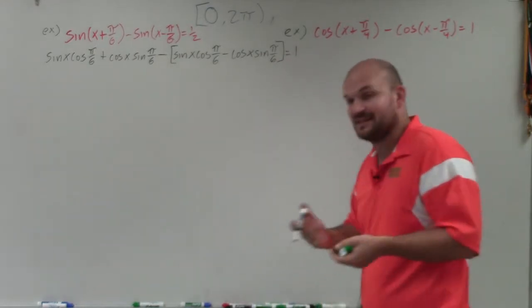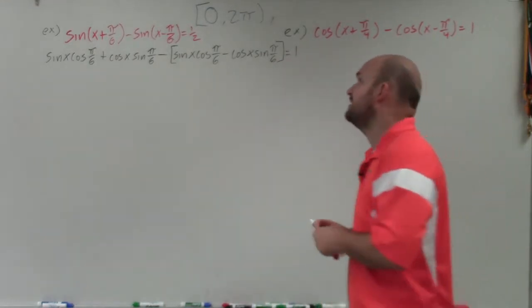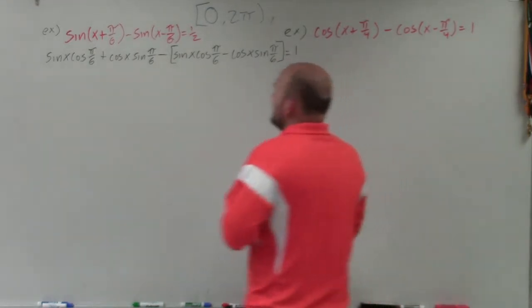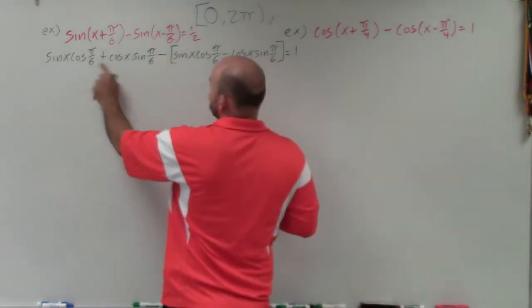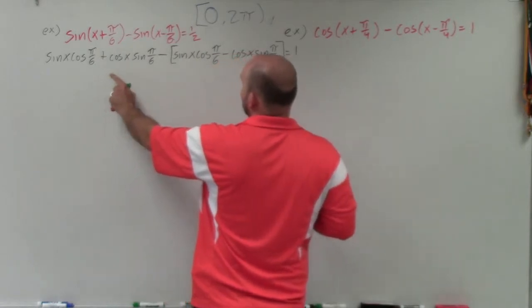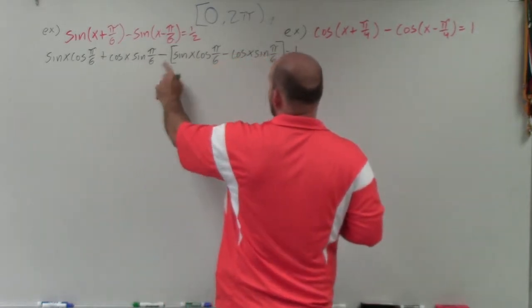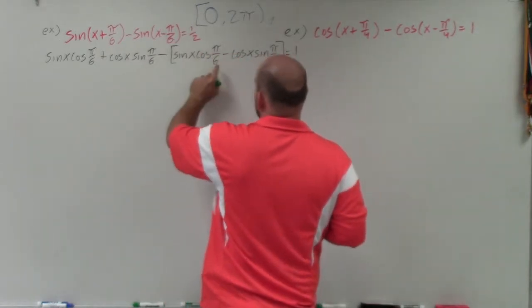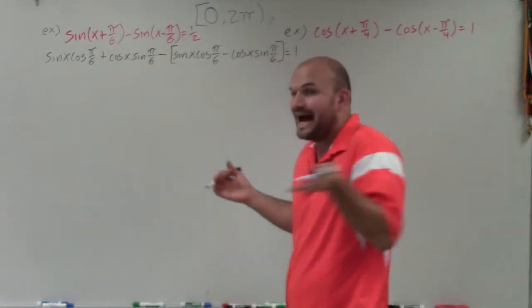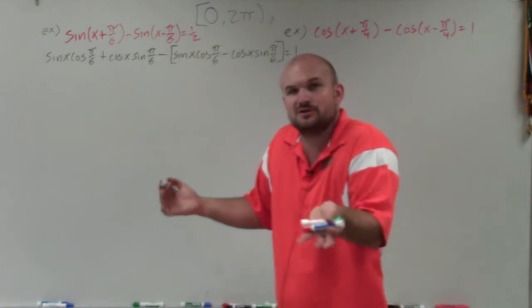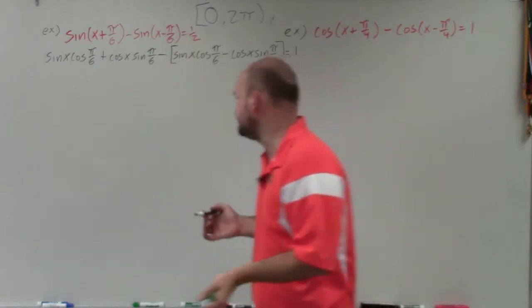What's nice about this formula is you can see that now I have cosine of pi over 6, sine of pi over 6, cosine of pi over 6, sine of pi over 6 — and I can evaluate those for a value.